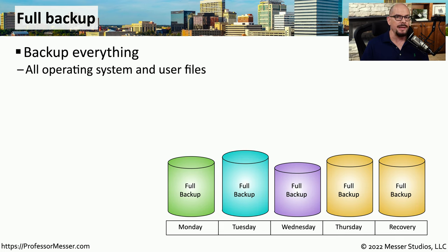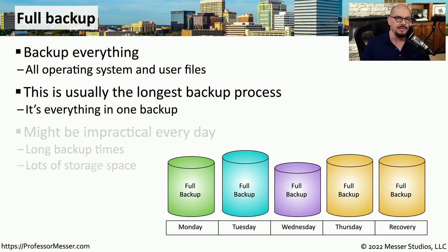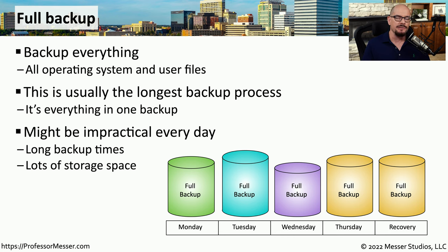A full backup is when you make a copy of everything that's on a particular file system. This would include operating system files, user documents, and anything else that's installed on that system. Because you're making a copy of everything that's on that device, this is usually the backup type that takes the longest. Transferring terabytes of data from every system that's on your network may not be practical to do every day of the week, and of course you have to think about where you're going to store all of this information once you've created the backup.